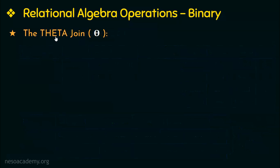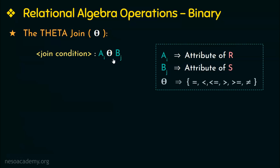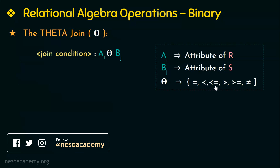Moving on, the next topic is the theta join. We had seen the syntax of the join operation earlier. The join condition is of the form ai theta bj, where ai is an attribute of relation R, bj is an attribute of relation S, and theta is any comparison operator — it could be equal to, less than, less than or equal to, greater than, greater than or equal to, or not equal to. The syntax is relation R followed by the join operator with the theta condition in the subscript, followed by relation S.